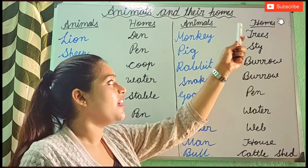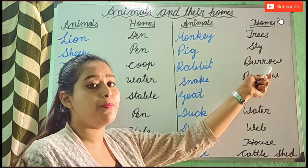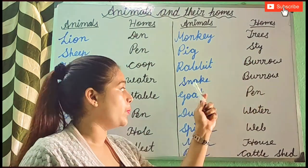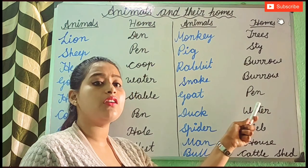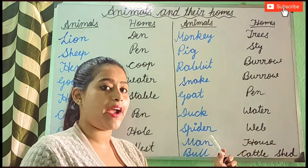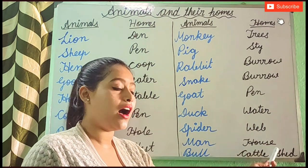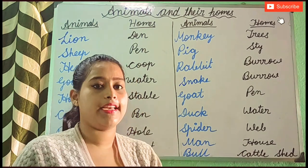Once again I am repeating. Monkey — trees. Pig — star. Rabbit — burrow. Snake — burrow. Goat — pen. Duck — water. Spider — wave. Man — house. Bull — cattle say.